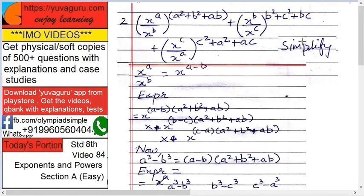Next, simplify this: x raised to a upon x raised to b, the whole raised to a squared plus b squared plus ab, plus x raised to b upon x raised to c, the whole raised to b squared plus c squared plus bc.